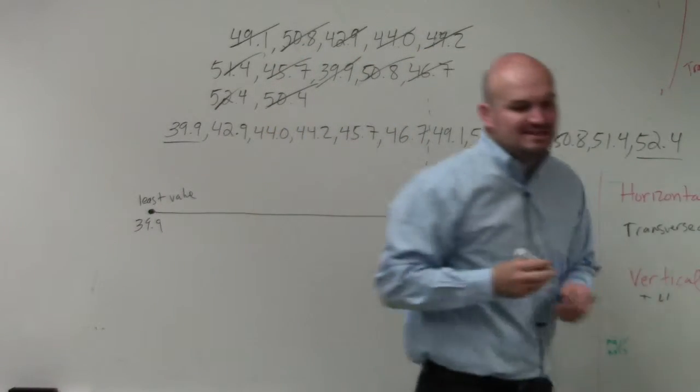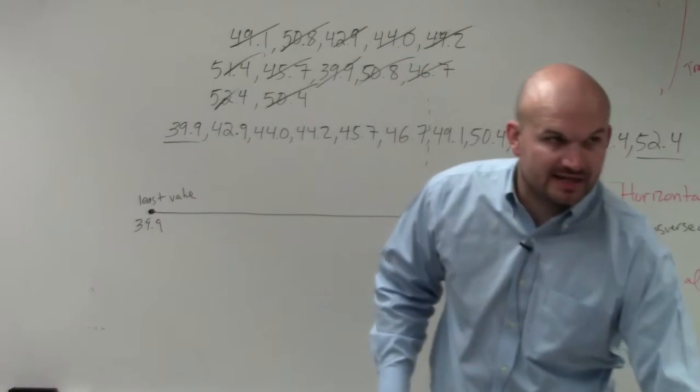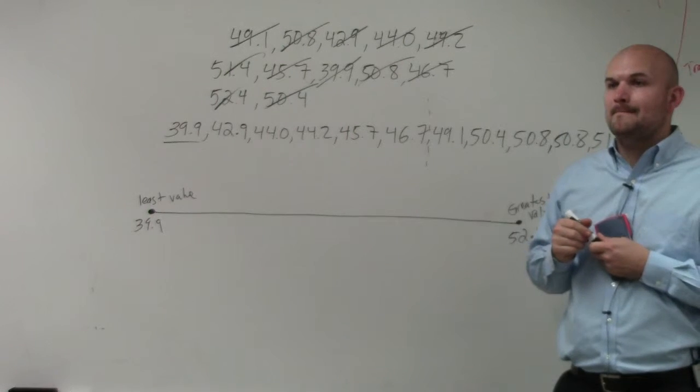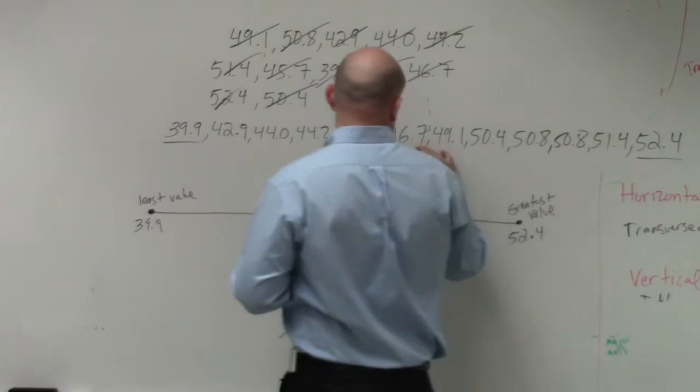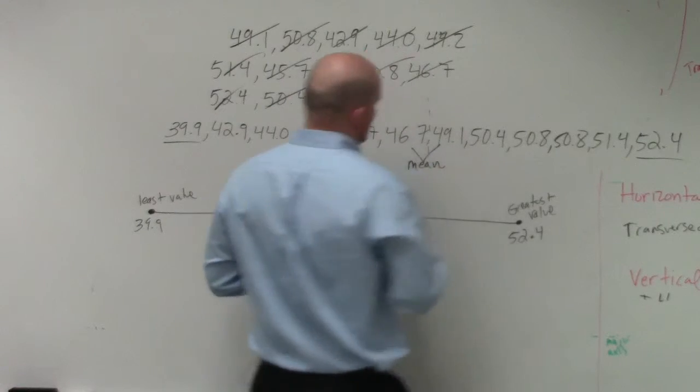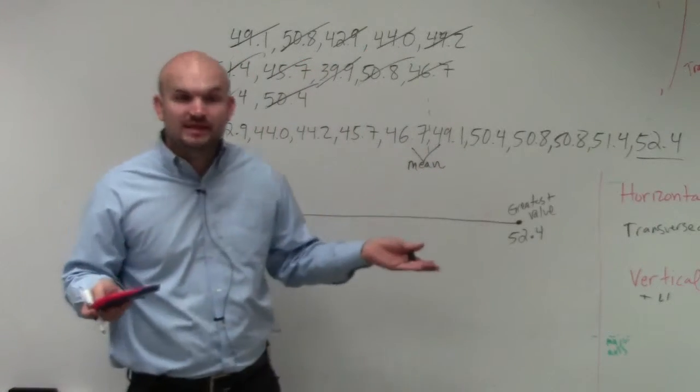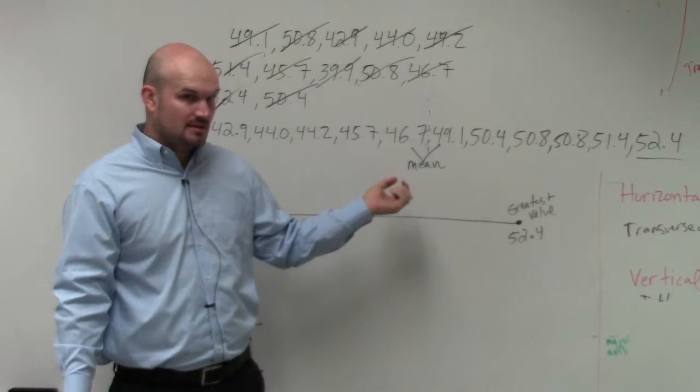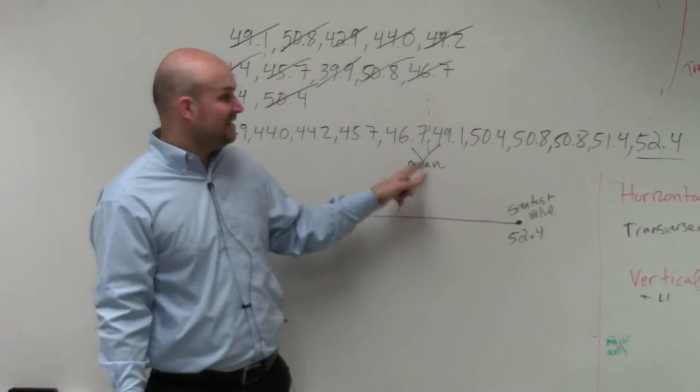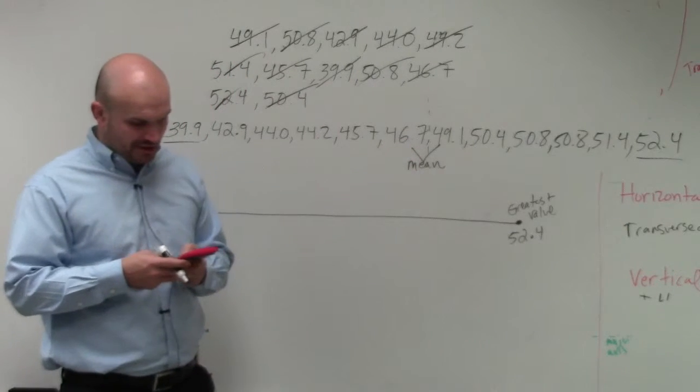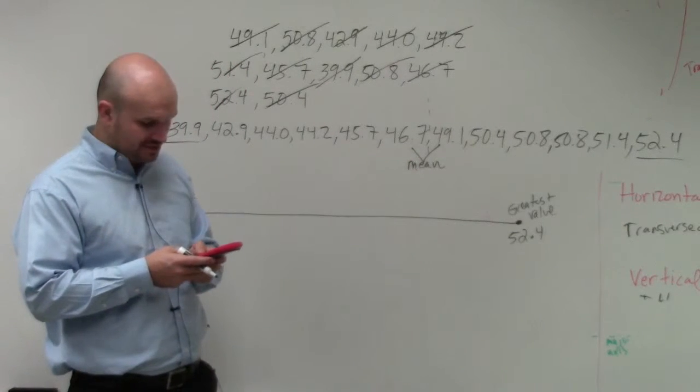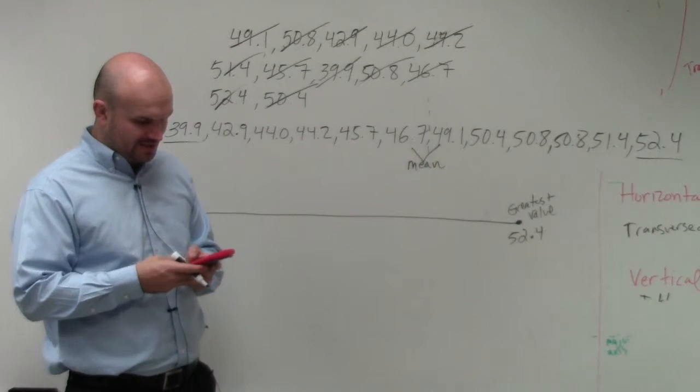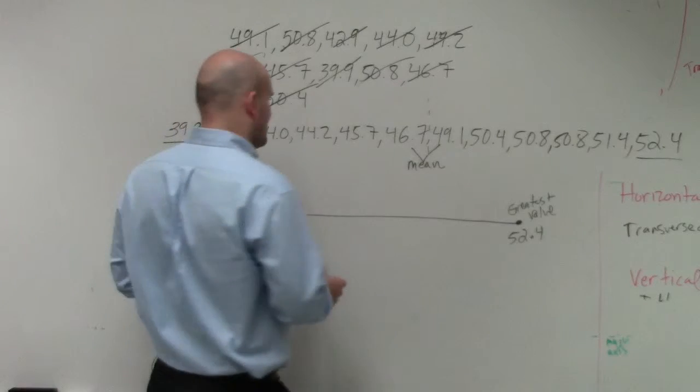So when you have an even data set, what you need to do when you're trying to find the median is find the mean. When you're trying to find the median and you have an even set of numbers, there's no number that's exactly in the middle. So what you need to do is find the mean between your two middle numbers. So all I do to find the mean is I'll just do 46.7 plus 49.1, divide that by 2, and I get 47.9.